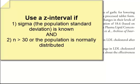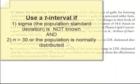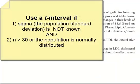If I know the population standard deviation and I have either a large sample size or my population is normally distributed, I would do a Z interval. If I don't know the population standard deviation, I only have a sample standard deviation, I still have to have either a large sample size or a normal population, but I would do a T interval because I don't know sigma.